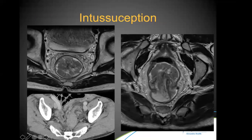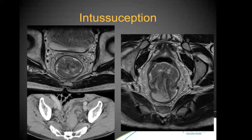An unusual finding is tumor intussusception — where the tumor travels through the mesorectum and intussuscepts forward. This generally has a low risk of CRM involvement because the tumor is free enough to travel through the mesorectal fat. Surgeons operate with total mesorectal excision and do not reduce it on the table, so there are generally fewer chances of CRM involvement in these cases.